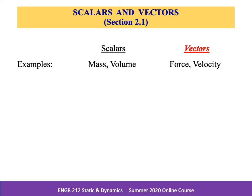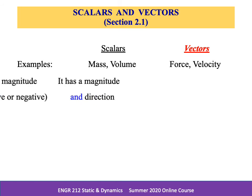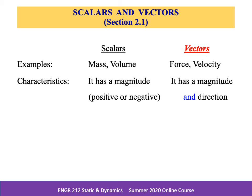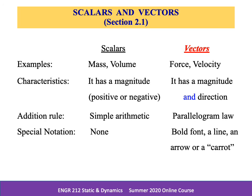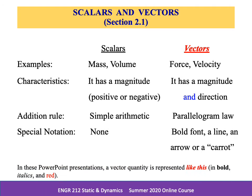However, vectors, which include things like force and velocity, have both a magnitude and a direction. A vector is any physical quantity that requires both magnitude and direction for its complete description. The length of the arrow typically represents the magnitude of the vector, and the angle between the vector and a fixed axis defines the direction of its line of action. The arrowhead tip is used to indicate the sense of direction of a vector.